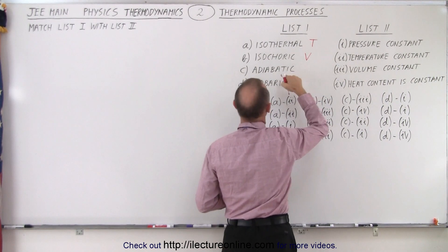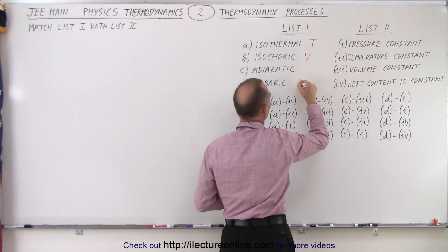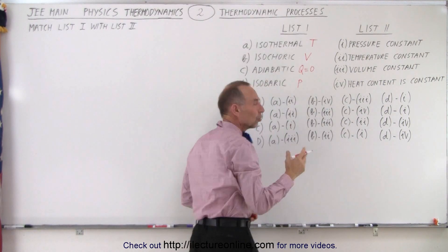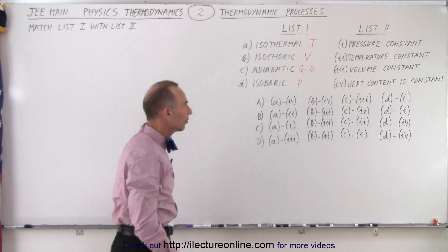Isochoric, the volume remains constant. Isobaric, the pressure remains constant. Now for the adiabatic process we know that there is no heat exchange, so heat going in and out is equal to zero.